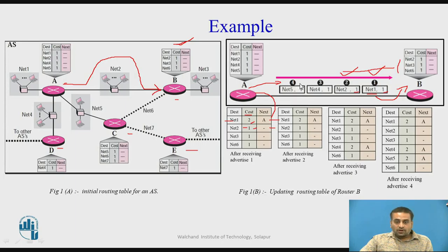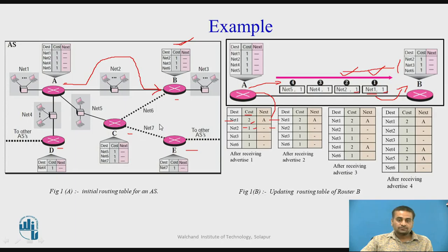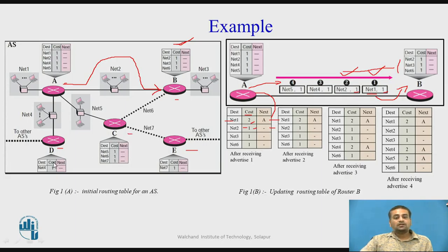All four updates are now accommodated, but the routing table of B is not yet complete because B does not have any information about network 7. More updates are still required. Similarly, you can construct the routing tables of all the other routers.